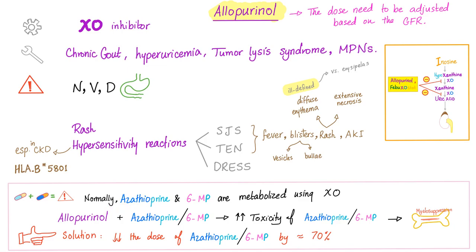Drug-drug interactions: azathioprine and 6-mercaptopurine are metabolized using xanthine oxidase. If you give allopurinol, which inhibits xanthine oxidase, no enzyme will degrade azathioprine or 6-mercaptopurine. Giving allopurinol plus azathioprine or 6-mercaptopurine will increase their toxicity, including myelosuppression. The solution is to decrease the dose of azathioprine or 6-mercaptopurine by about 70% if given with allopurinol.